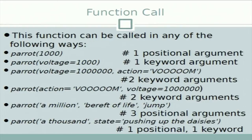We can also call 'parrot(voltage=100000, action="whom")' — the position of keyword arguments doesn't matter. We can also call with all positional arguments such as 'parrot("a million", "a barrel of life", "jump")' where voltage gets 'a million', state gets 'a barrel of life', and type gets 'jump'. We can mix positional and keyword arguments. Next is a comparison between Java and Python.